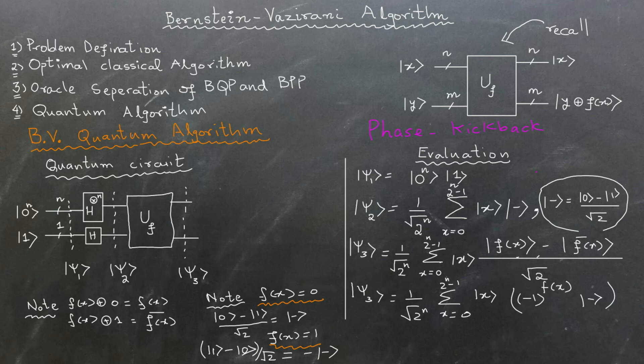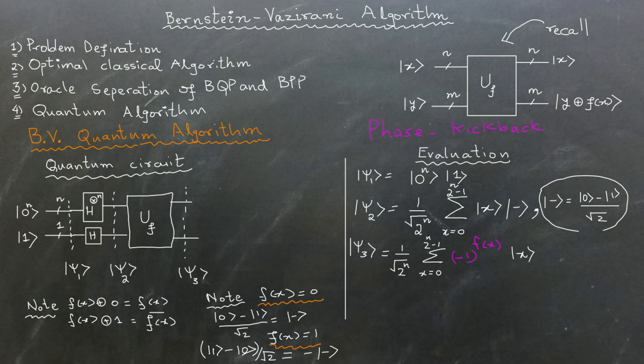Using the concept of phase kickback, I can assign the minus 1 raised to power f of x phase to the first register, making it 1 over square root of 2 raised to power n times the summation from x equals 0 to 2 raised to power n minus 1 times minus 1 raised to power f of x times ket x. I am not writing the second register, which is there but not needed in any of the future calculations. We know that in the case of Bernstein-Vazirani problem, f of x is equal to x dot s. So let's substitute x dot s in place of f of x in ket psi 3.